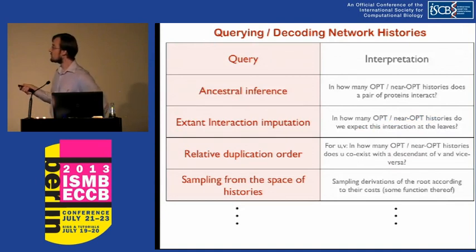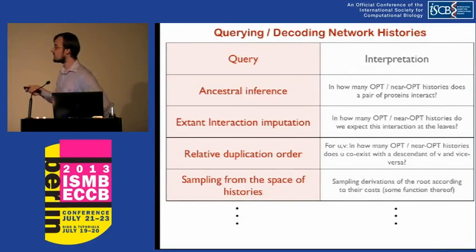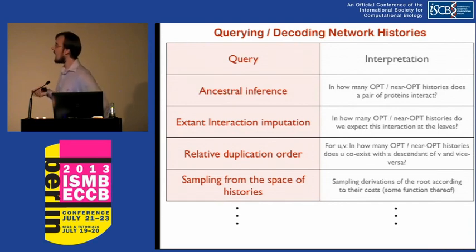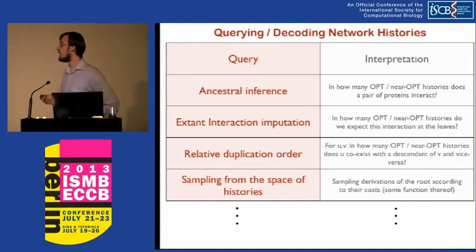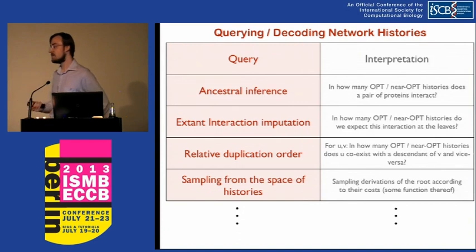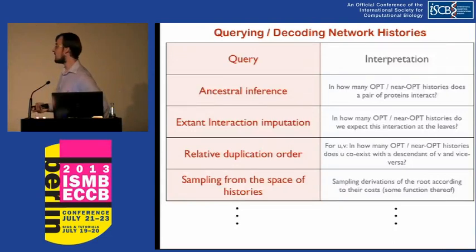Let me touch on some particular uses of this combinatorial structure. For ancestral inference, we're asking: in how many optimal and near-optimal histories does a pair of proteins interact? For extant interaction imputation, we ask: in how many optimal or near-optimal histories do we expect an extant interaction to exist at leaves we don't observe? For relative duplication order, we ask: over this set of histories, how many times does U coexist with a descendant of V, meaning V must have duplicated first — or vice versa?